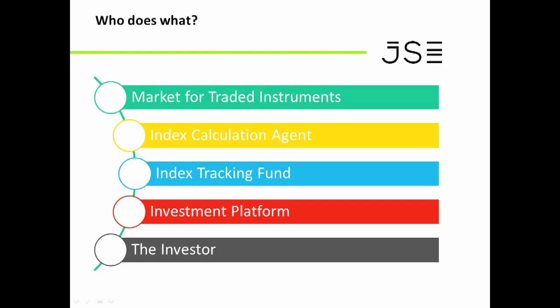There's a lot more to it than that — we have to follow rules, we do R&D, and there are all sorts of things involved. But at the end of the day, the index calculation agent is an independent party responsible for publishing that number every day. So when you see on TV that the Top 40 closed yesterday at 38,000 give or take — that's the number that would come out of my team.